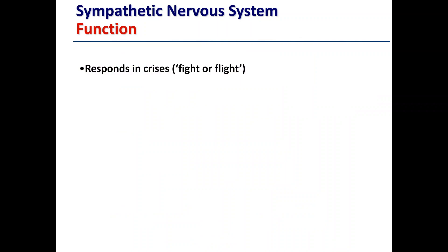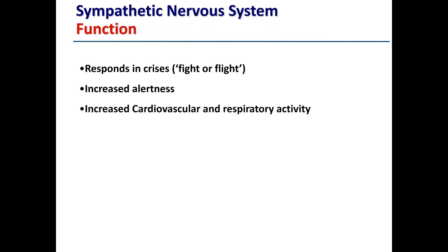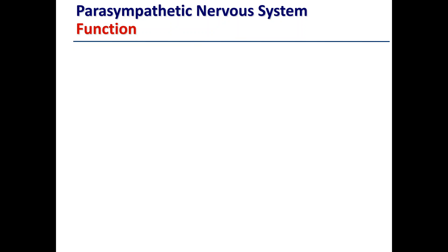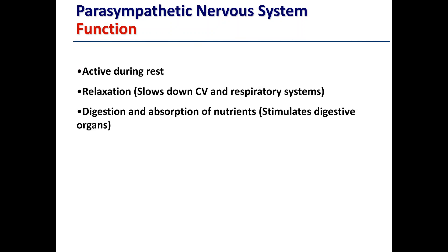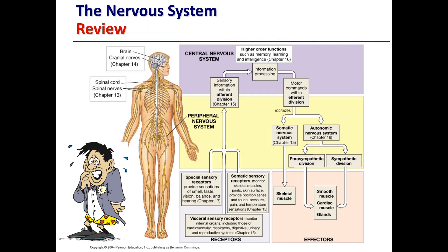In more detail: the sympathetic nervous system responds in crises — fight or flight — and is very active during exercise and physical activity. It increases alertness, cardiovascular and respiratory activity, and mobilizes energy resources to facilitate movement. The parasympathetic nervous system is active during rest, slows down the cardiovascular and respiratory systems, and stimulates the digestive organs to allow digestion and absorption of nutrients.